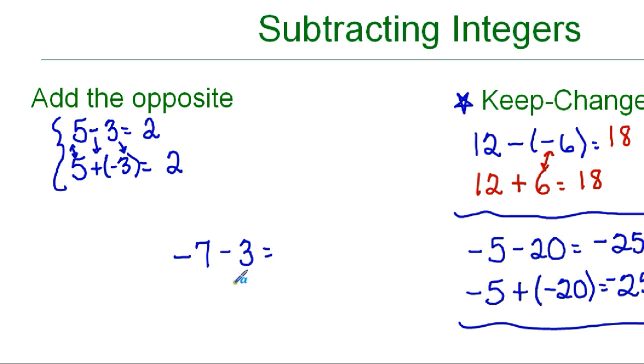I have negative 7 minus 3. Not a great problem because I have negatives and the minus, so I'm going to rewrite it as addition. Instead of rewriting it underneath, I'm going to say keep, so I'm not going to touch this negative 7. Change this to addition. Change this to its opposite. Right now, it's positive, so I'm going to put a little negative. So, now I have negative 7 plus negative 3. Signs are the same. Add the numbers. Keep the sign. So, the answer is negative 10.